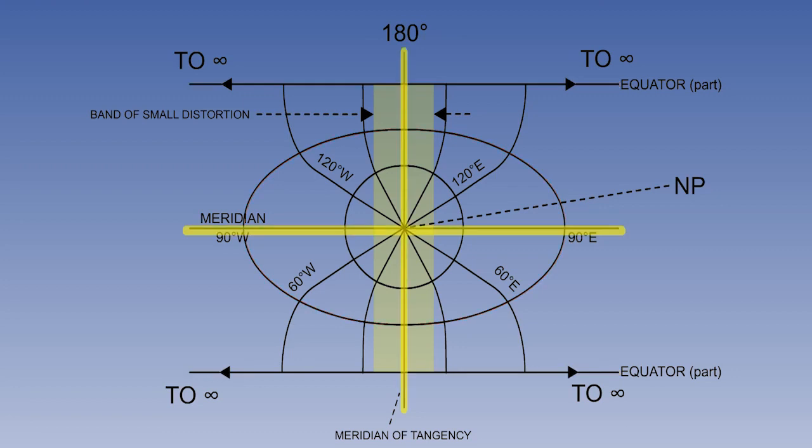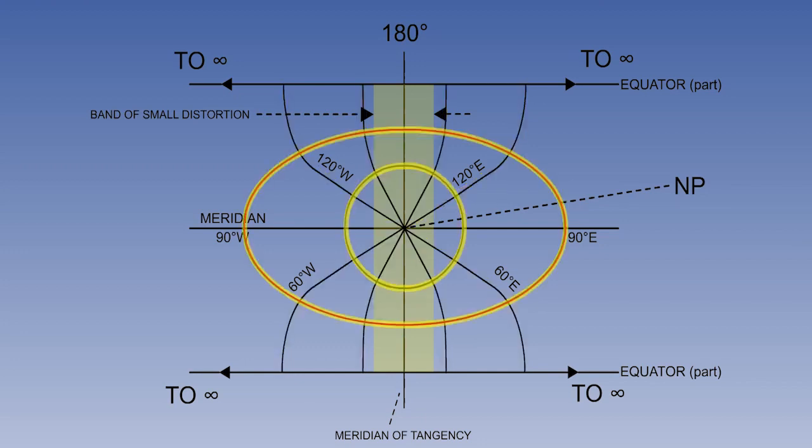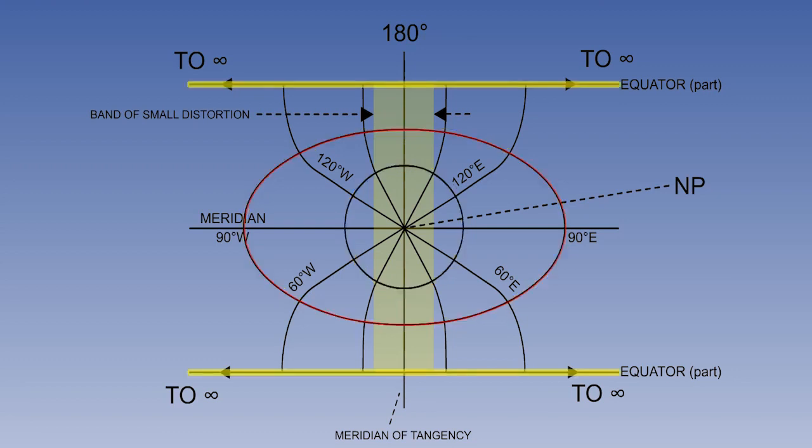Therefore to summarize, the datum meridian and the meridian perpendicular to it are straight lines. All other meridians are complex curves. Parallels are ellipses which become more elliptical with the distance from the pole, and the equator appears as two straight parallel lines.